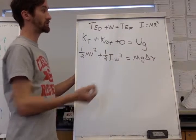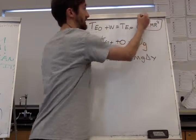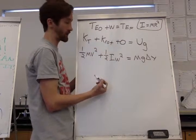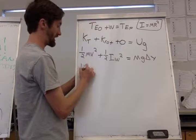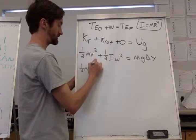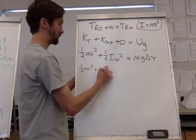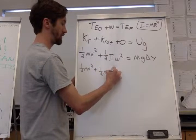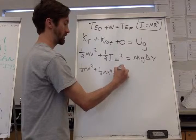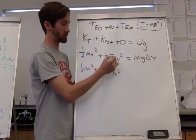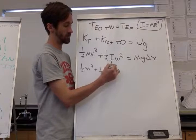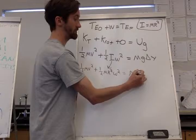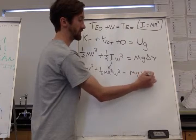And what we're going to do is the problem tells us that the inertia for that hoop is mr squared. So we're going to come in and put that in. One half mv squared plus one half mr squared omega squared. So I just took that I and I put in mr squared equals mg delta y.